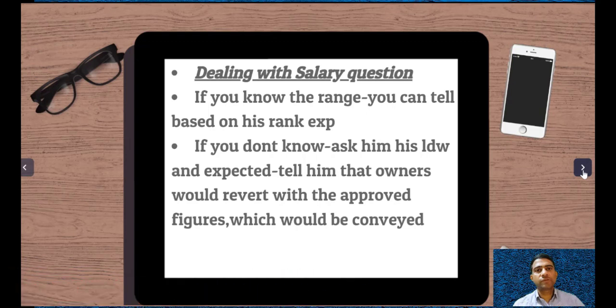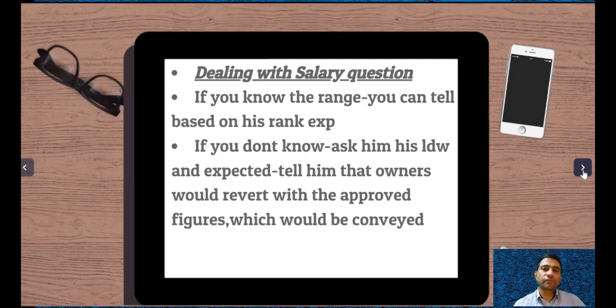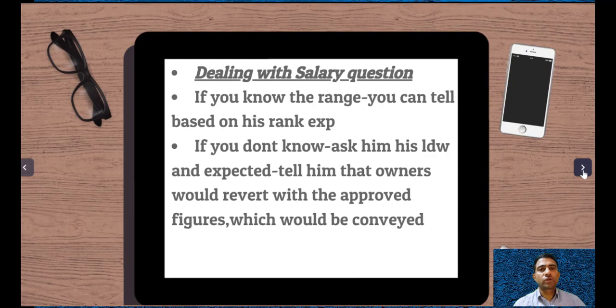If you don't know, ask him his last drawn wages and expected salary, and tell him that the owners will revert with the approved figures. Basically, if you don't know what to offer, politely ask: 'Sir, what was your last drawn wages and what are your expectations?' You can then say that we will propose your CV to the owners and the owners will revert with the salary. You can always refer to a vague entity like 'management' or 'owners' and tell them they will decide the wages and get back to you.